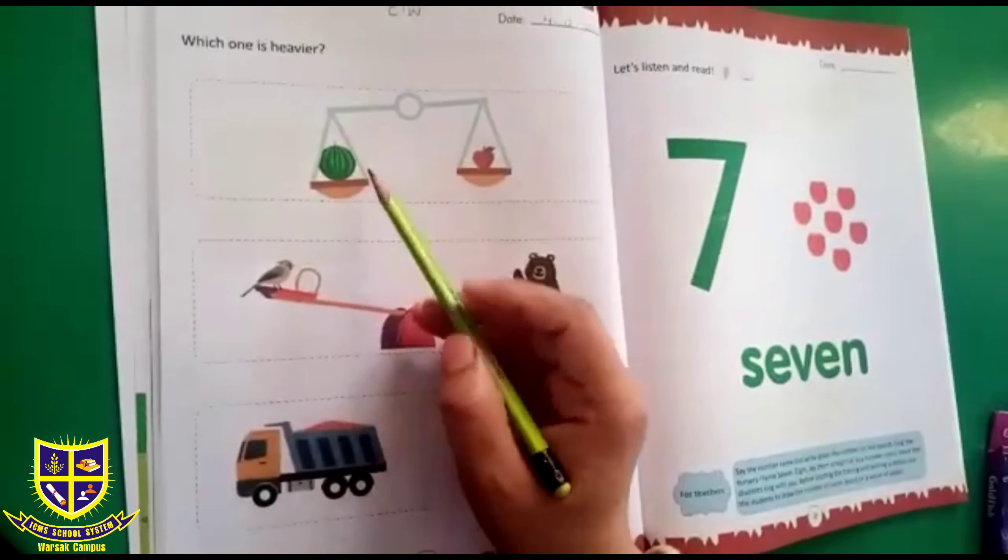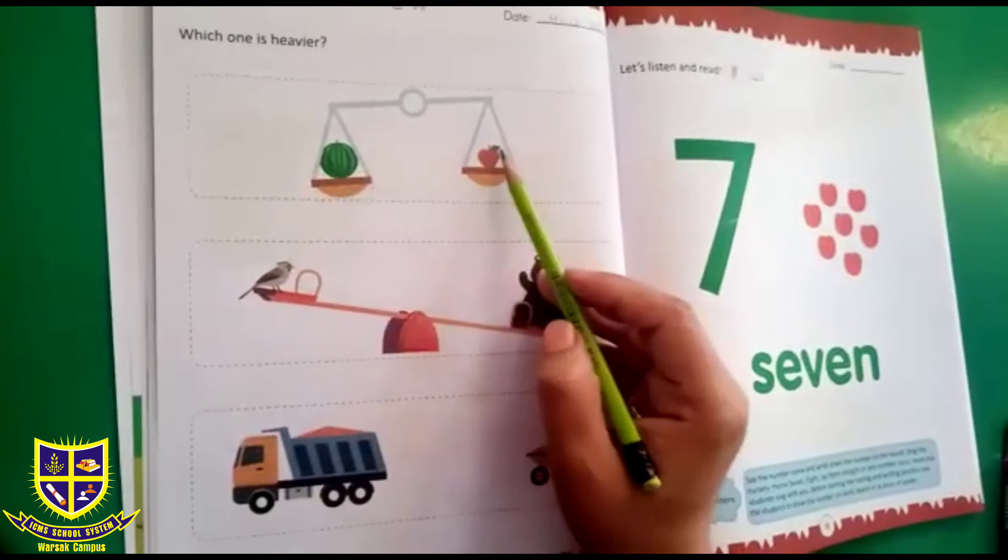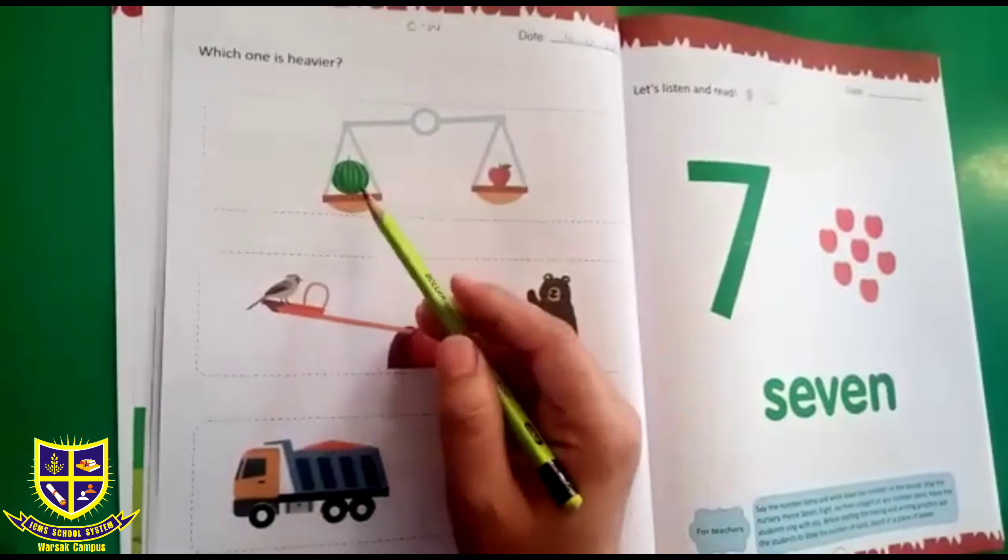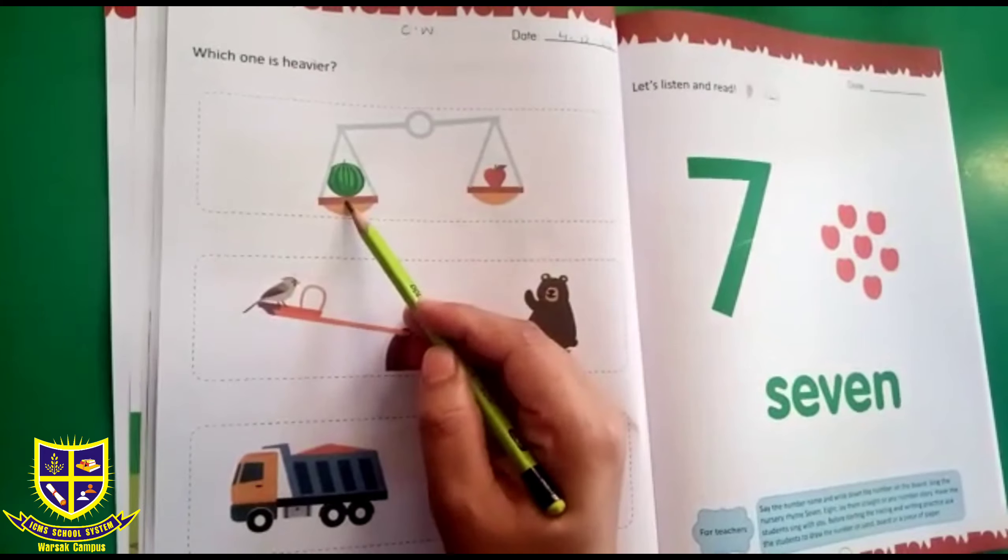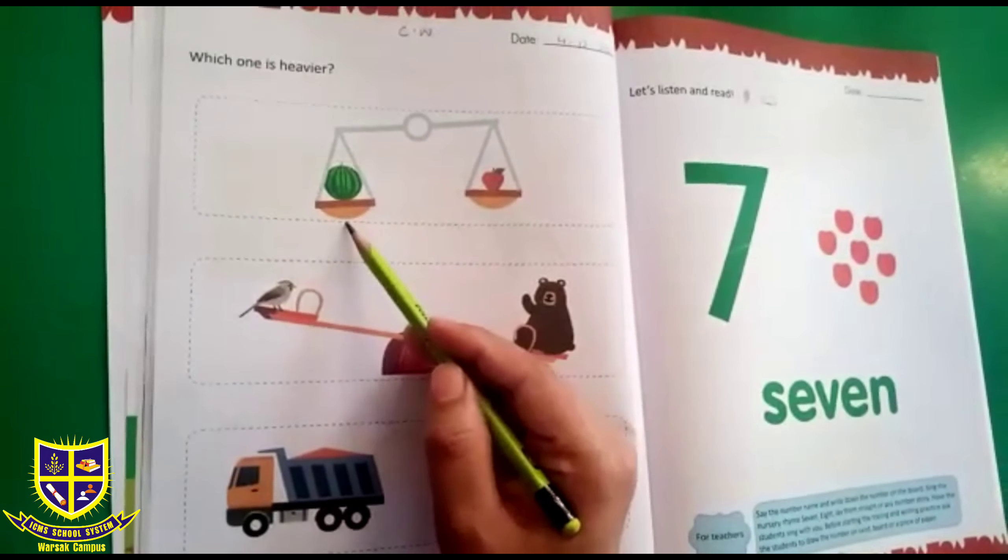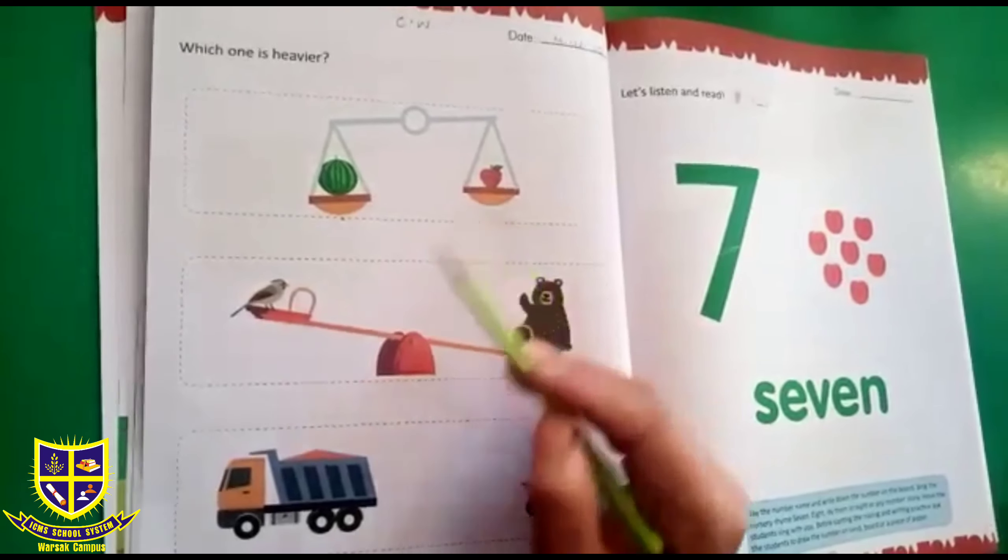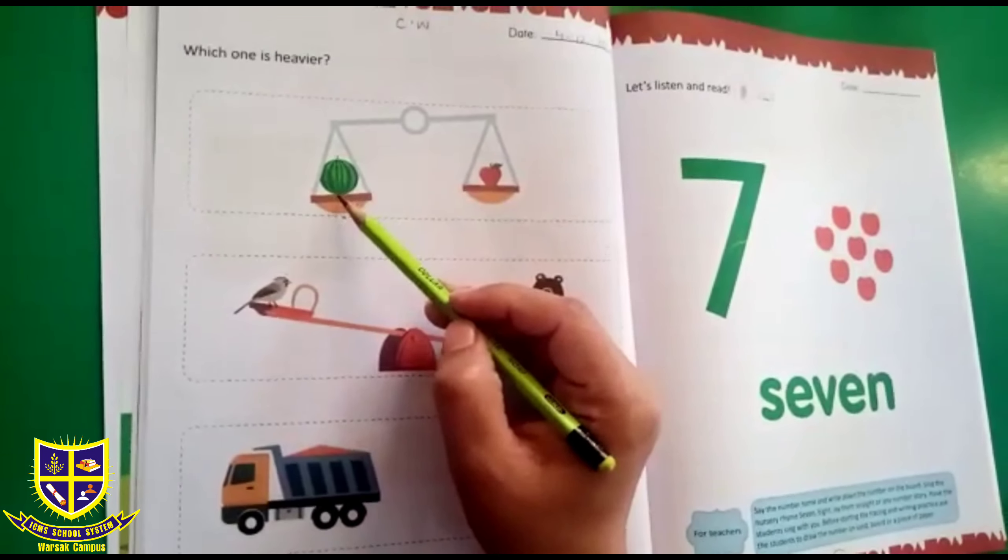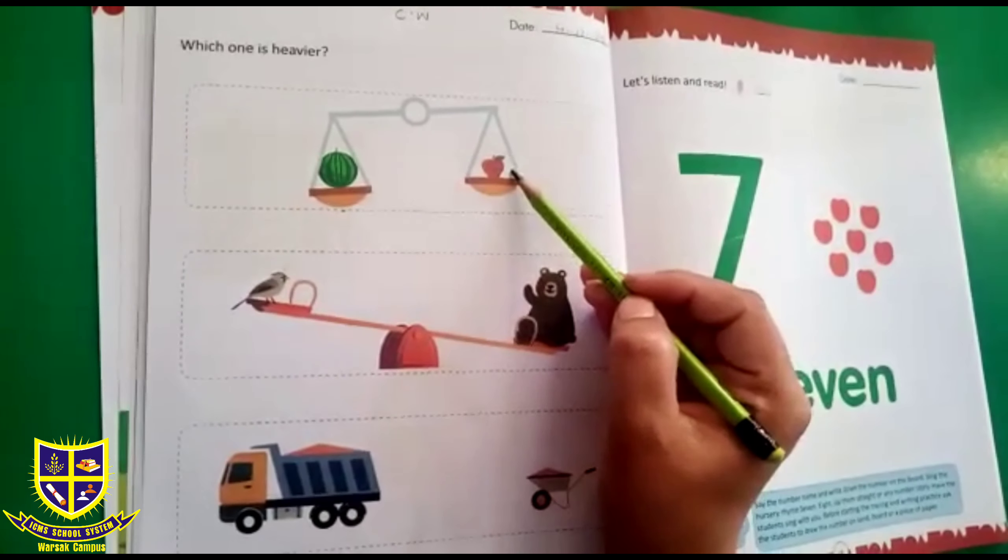Now you can see that here is a watermelon in one part of the weighing machine, and here is an apple in the other part of the weighing machine. You know that watermelon is heavier than apple. You have seen in the weighing machine that the watermelon's weight is on the ground and apple is in the air. Watermelon is heavy, so it is down, and apple is in the air, lighter.